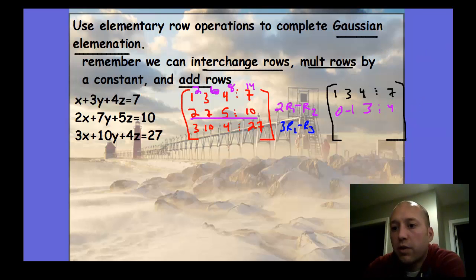We do the same thing with the third equation. I'm multiplying by 3, so I have 9 here, 12 here, and 21, then subtracting this third column. So 3 minus 3 is 0 again, 9 minus 10 is negative 1, 12 minus 4 is 8, and 21 minus 27 is negative 6.